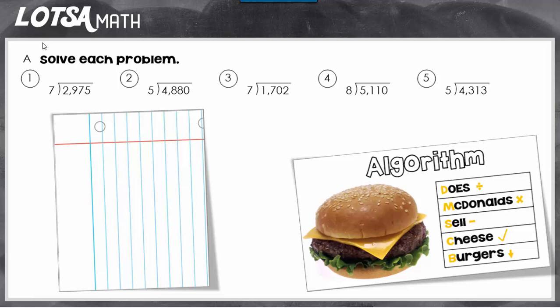So if you look at number one, we see 2,975 divided by 7. I would suggest that you turn your notebook paper sideways so that you can keep these columns — it'll make keeping everything lined up easier. So I'm just going to start by writing my problem down: 2,975 divided by 7.